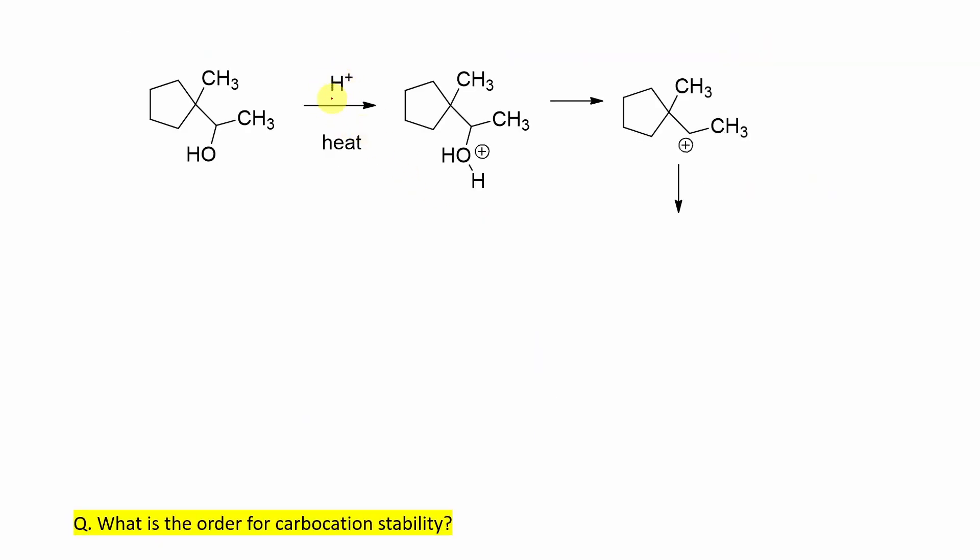So first, H+ will protonate this alcohol and it will produce this OH2+. Now, after protonation, this OH becomes a good leaving group because the leaving group is actually water, a neutral molecule, stable. And it will result as a secondary carbocation.